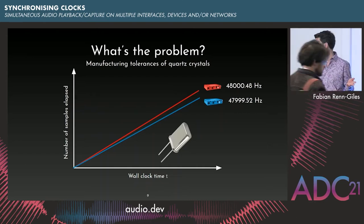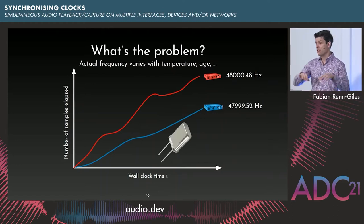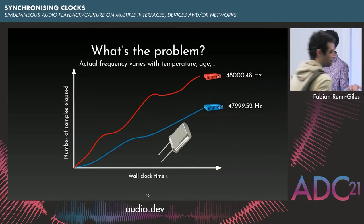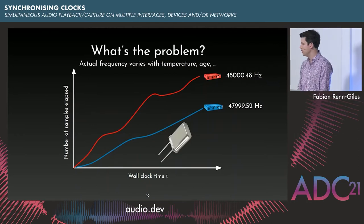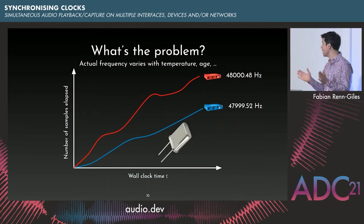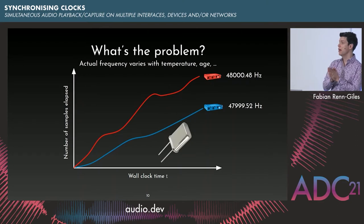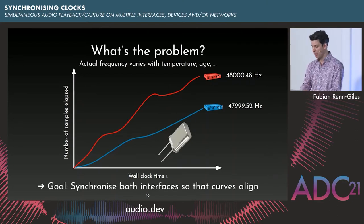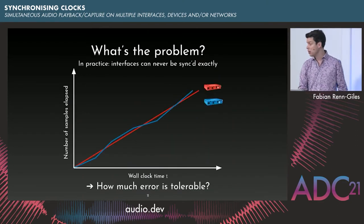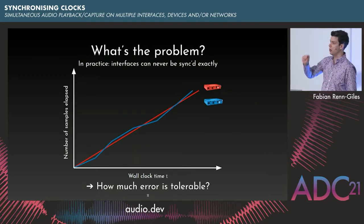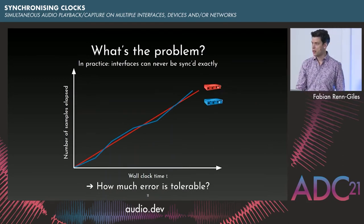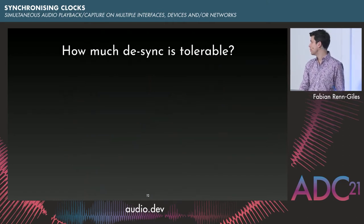And even worse, that drift is not static — it's dynamic. It varies with temperature, age, electrostatic environment, etc. So the goal of this talk is: can we find an algorithm to somehow align these two lines again? We will never do that perfectly; there will always be some error remaining. And a good question to ask is: how much time sync error is tolerable?